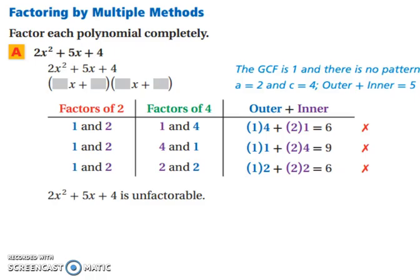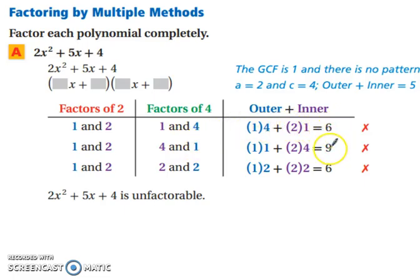Now let's look at factoring by multiple methods. We have 2x squared plus 5x plus 4. There's no greatest common factor to pull out, and it's not a perfect square trinomial or a difference of two squares. Looking at factors of 2 and factors of 4, the outside plus inside must equal 5. Trying 1 and 4, then 4 and 1, we get 6 and 9 — not 5. Trying 2 and 2, the outside plus inside still doesn't give 5. It's unfactorable.